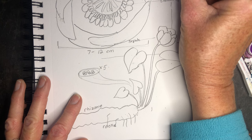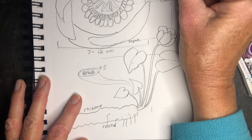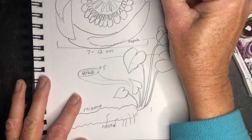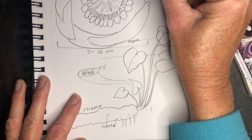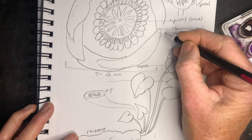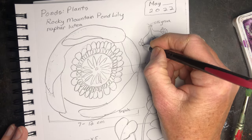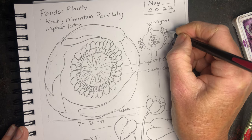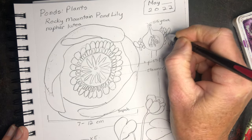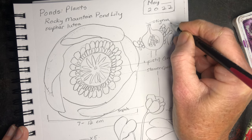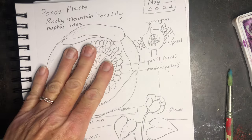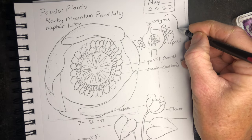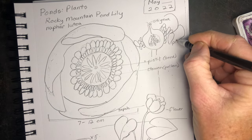If you looked at this from the side, there would be the stigma on the pistil, and then the stamens around the pistil, and then there would be the petals. If we're looking at this thing turned to the side and cut in half, then there would be these big sepals around the flower.